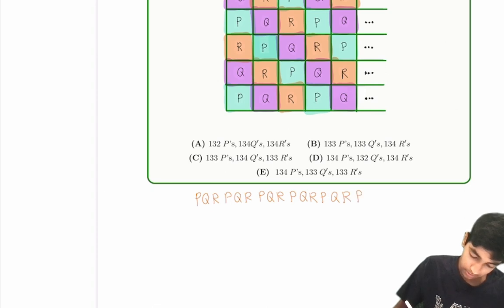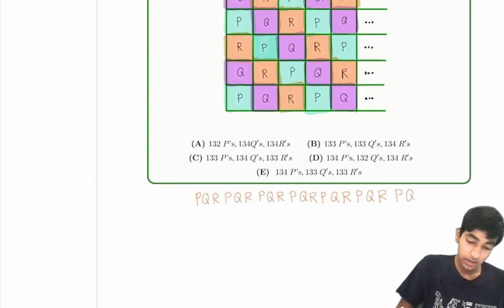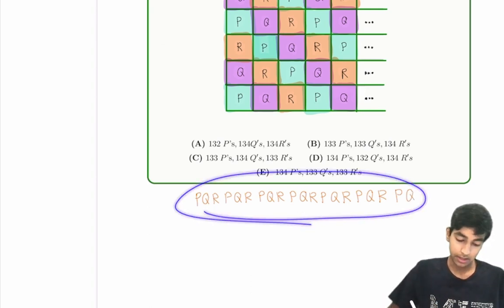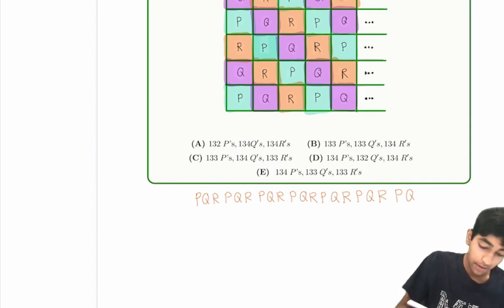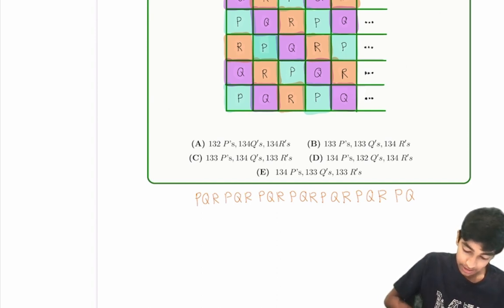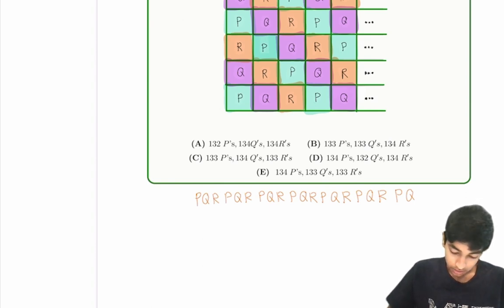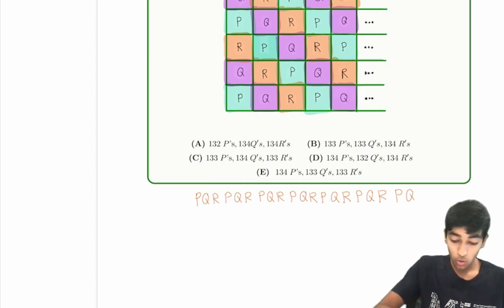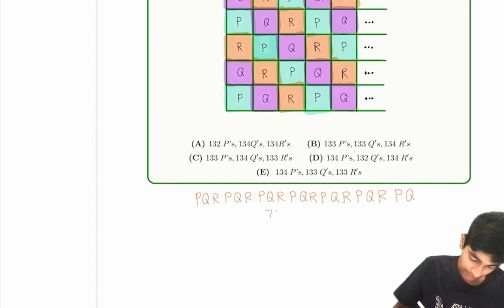After these six groups, that's a total of 18 letters. There are going to be two letters after that: P and Q. So there's a total of 20 letters. There are six groups of P, Q, R, and then P, Q. So a total of seven P's, seven Q's, but only six R's — because there's no R in the final P, Q. That adds up to 20.